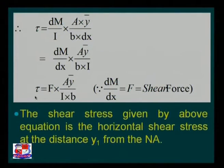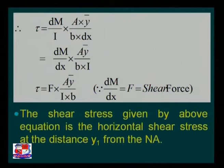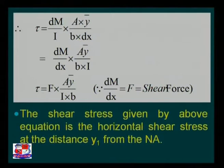In this equation, τ is the shear stress at a particular section; F is the shear force at that section; I is the moment of inertia; b is the width of the section; A is the area of the section above the layer; and ȳ is the distance of the centroid of that area to the neutral axis. The shear stress given by this equation is the horizontal shear stress at distance y₁ from the neutral axis.